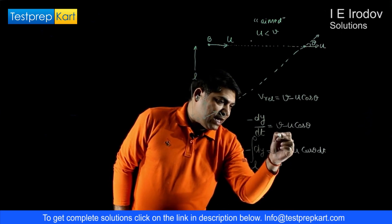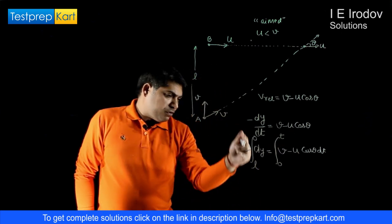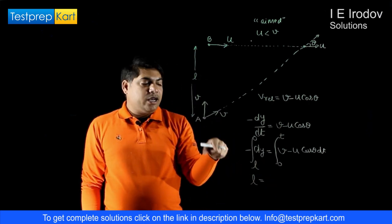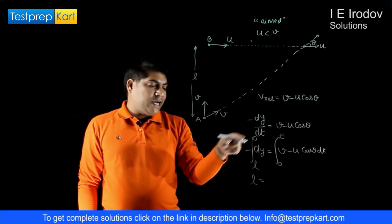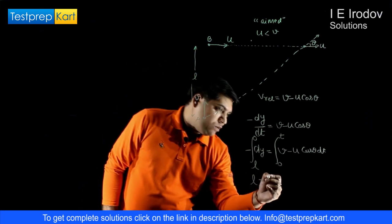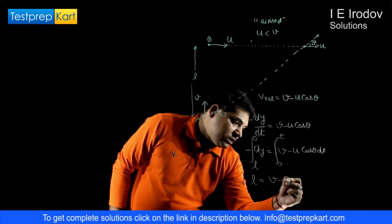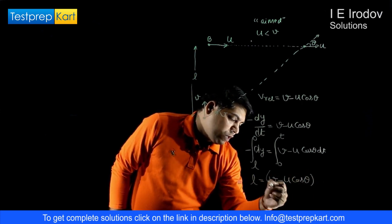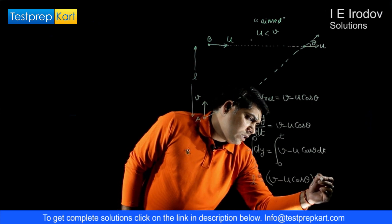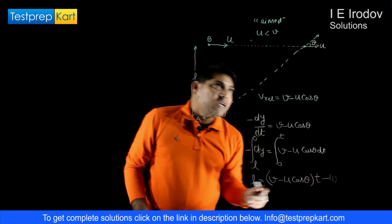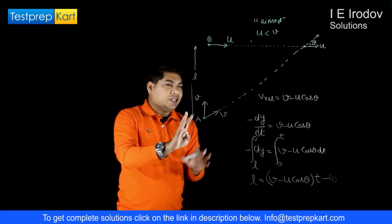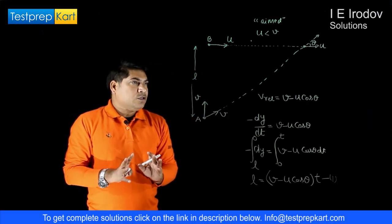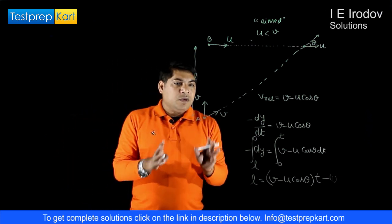Performing the integration and substituting the limits, we get our first equation: l = (v minus u·cosθ) × t. However, this alone is not sufficient to determine convergence, because in two-dimensional motion both objects must also cover equal distance in the horizontal direction.